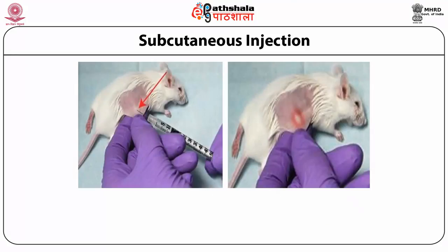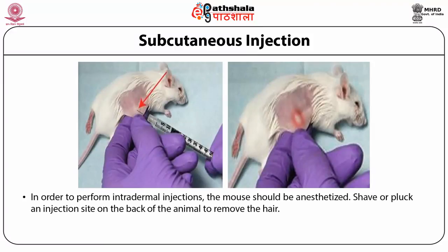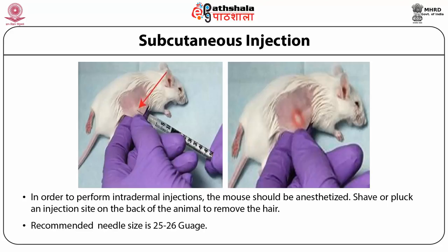The third injection is intradermal, used for raising antibodies or for collagen injections in rheumatoid arthritis models. The mouse is usually anesthetized, the injection site is cleaned properly, and a 25 to 26 gauge needle is used for injection between the skin layers.